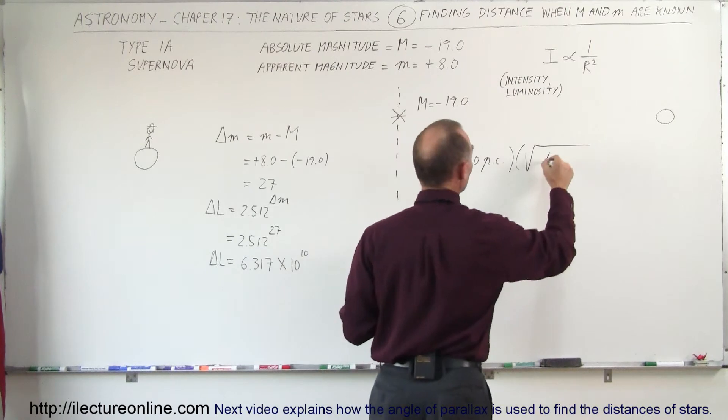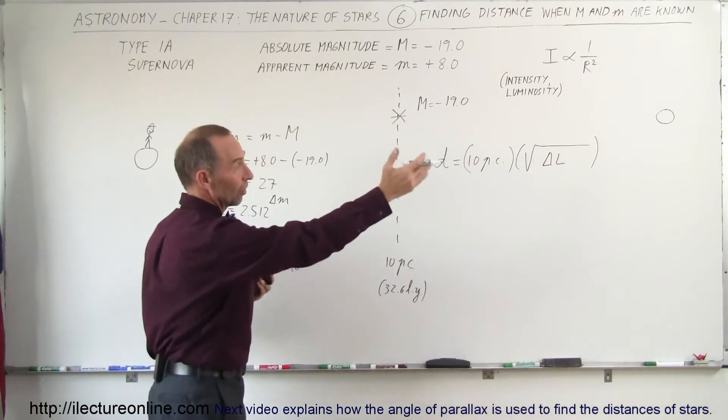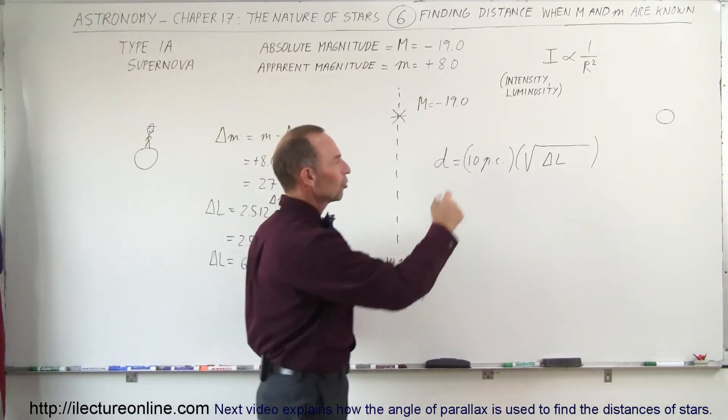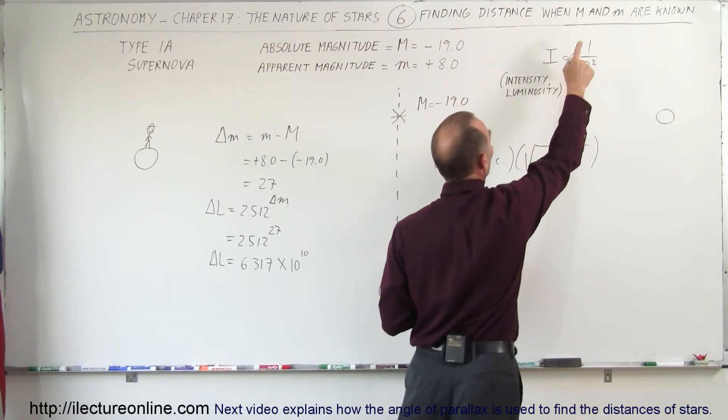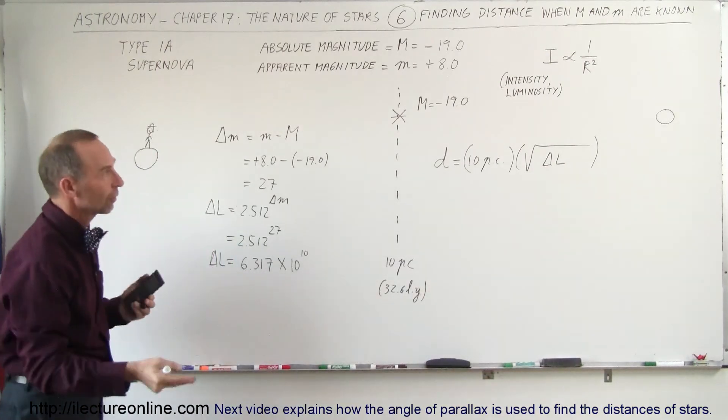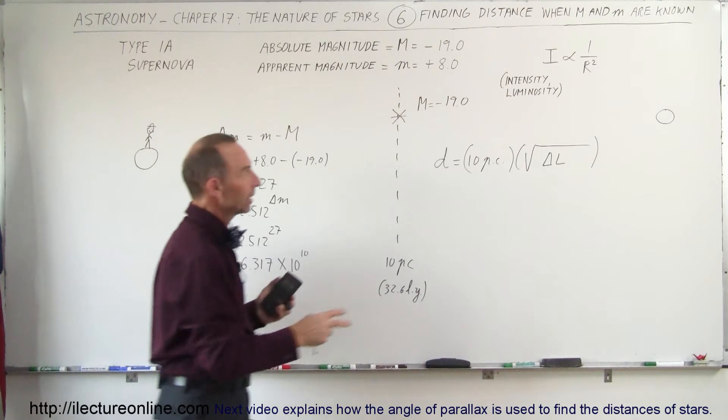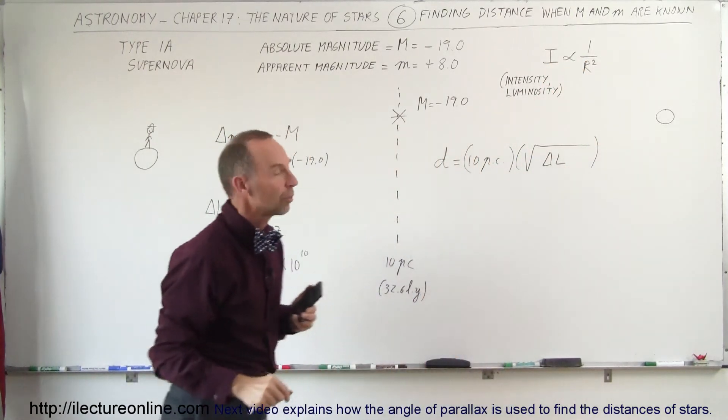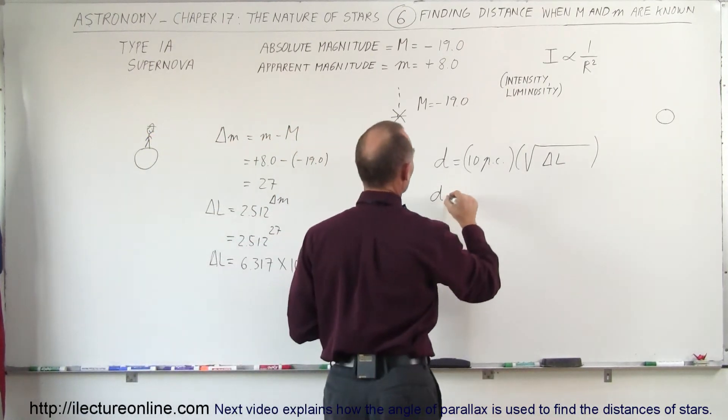The difference in luminosity compared to where it is to what it would be if it was 10 parsecs away. Now why do I do the square root of the luminosity? Because we know that the intensity or the luminosity is proportional to 1 over the distance squared. So that's why the square root is necessary to find the distance, because if you take the square root of both sides you can see that 1 over r is proportional to the change in the luminosity.